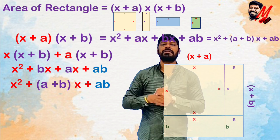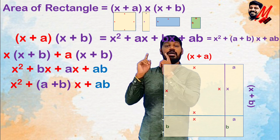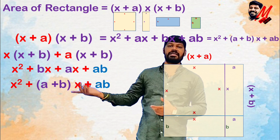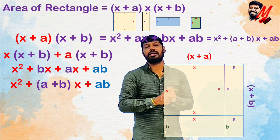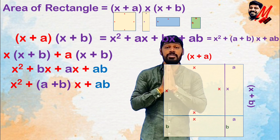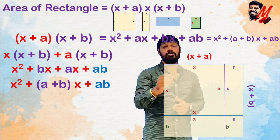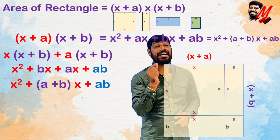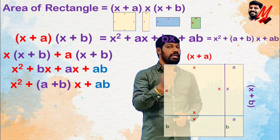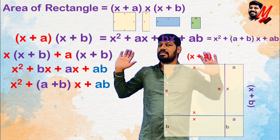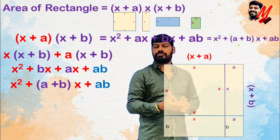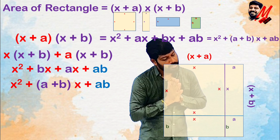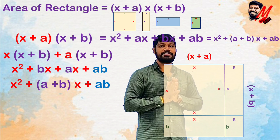This is the area of the full rectangle. So my children, x plus a into x plus b — this is the identity derivation or expansion, demonstrated geometrically. It is simple to understand and powerful to use in further classes. In this chapter, this particular identity is used in the factorization method. I hope you can understand this identity. We will meet in the next video with another topic. Until then, take care. Bye-bye. Your Lackal Master Haragopal.